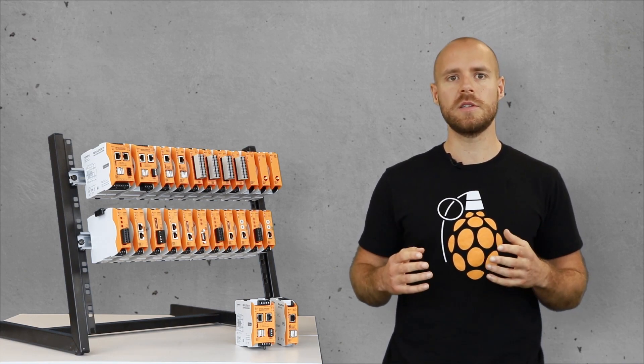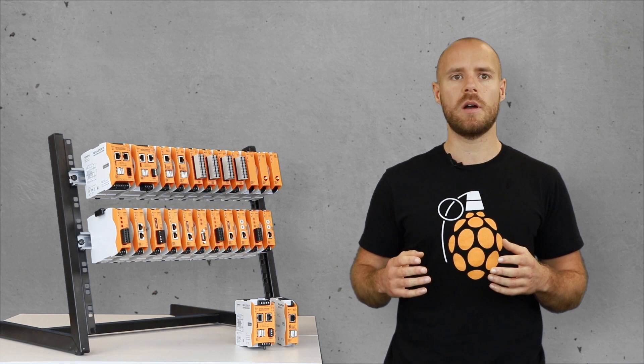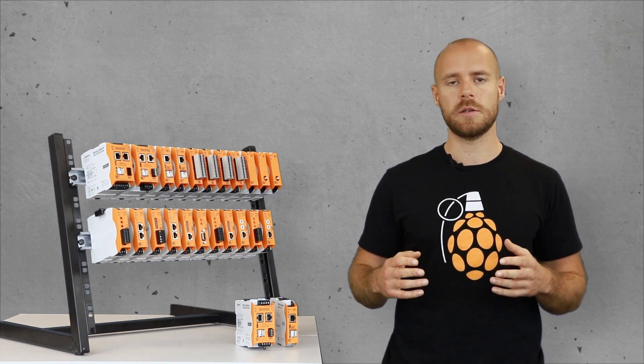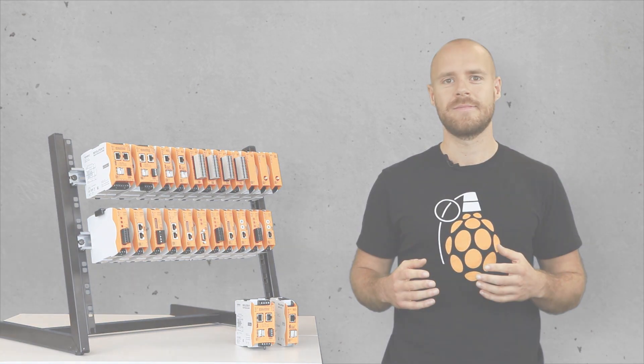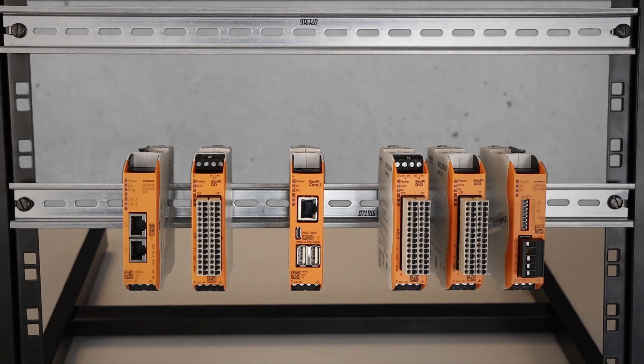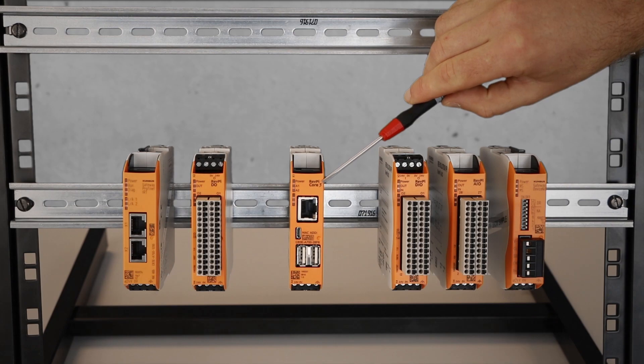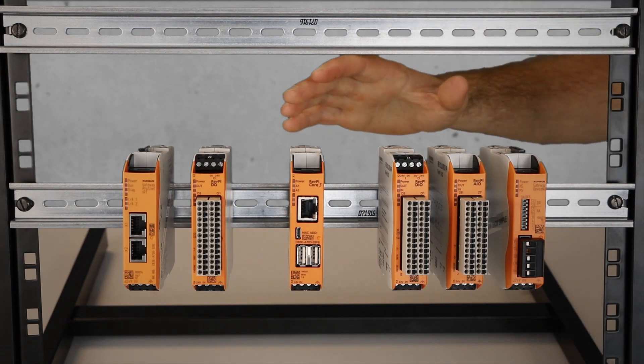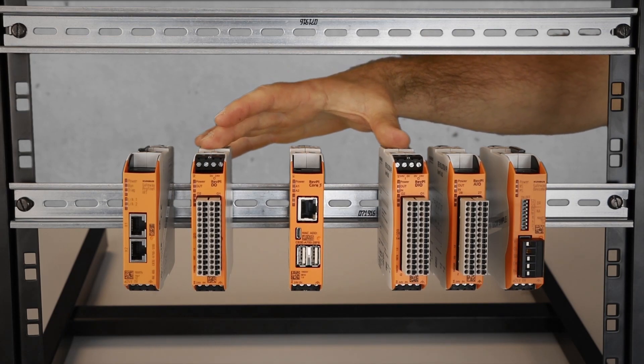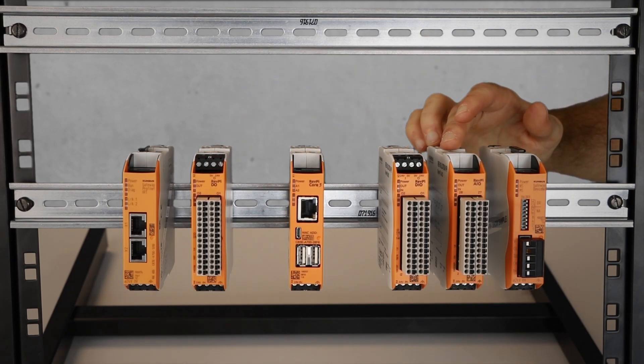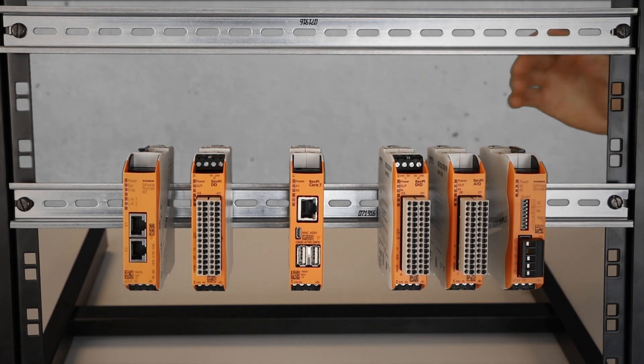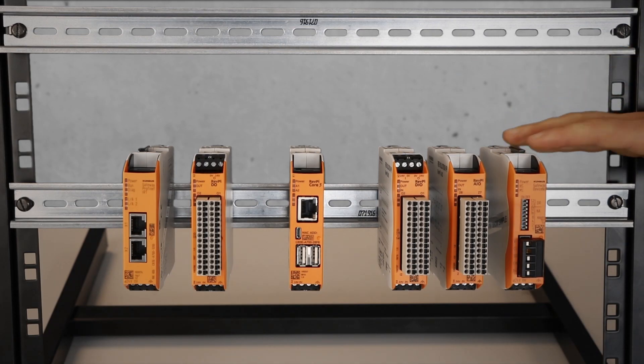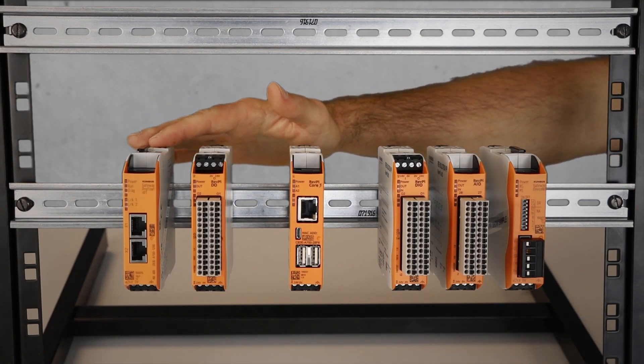To clarify this, I will now put together a possible RevPi Core system for you. As a base module, I'm using a RevPi Core 3. I took two digital and one analog I/O card, as well I took two gateways, one the Device Net and one the Profinet.